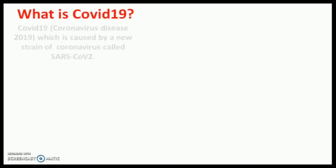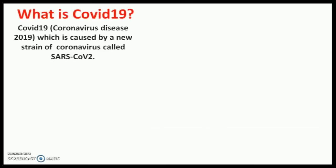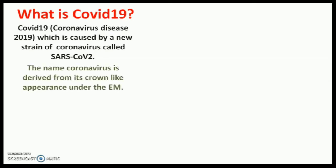COVID-19 is actually a name given by the WHO. Its full form is Coronavirus Disease 2019, and its actual name is SARS-CoV-2, which stands for Severe Acute Respiratory Syndrome Coronavirus 2, because it is the second time that this virus has attacked. The first one was in 2002, and we will talk about that.